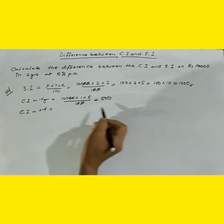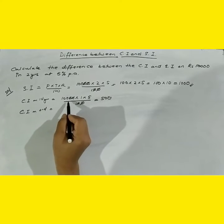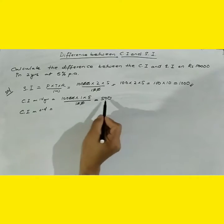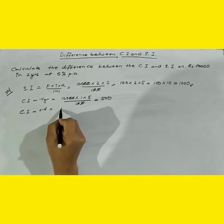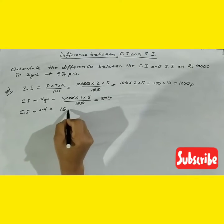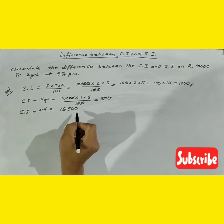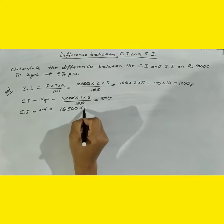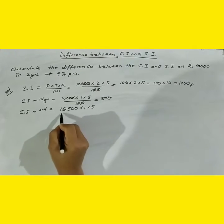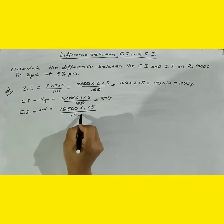And compound interest on second year. Compound interest on second year will be principal, so principal will be 10,000 plus 500. So 10,500 into 1 into 5 upon 100.